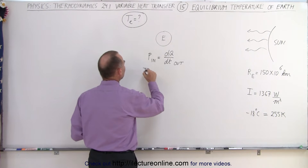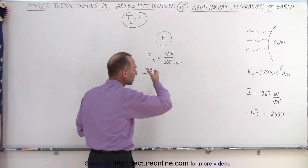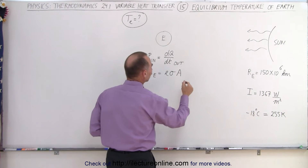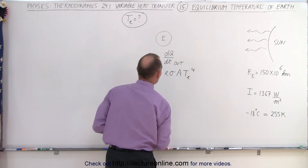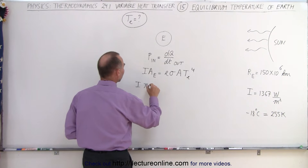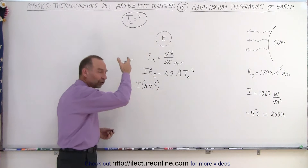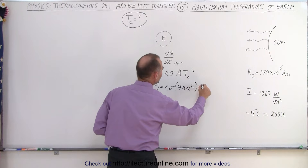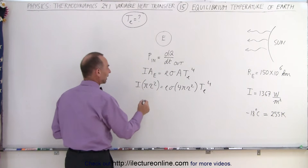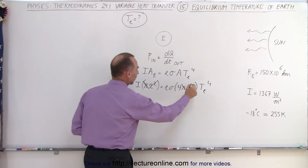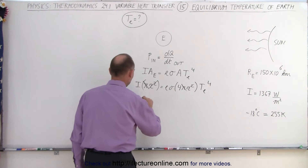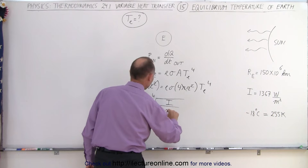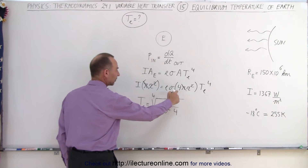The intensity times the effective cross-sectional area of the Earth equals E sigma times the surface area of the Earth times the equilibrium temperature to the fourth power. That gives us intensity times pi r squared equals E sigma times four pi r squared times T equilibrium to the fourth. The pi's and r squared cancel out, so solving for the equilibrium temperature we get the fourth root of the intensity divided by E sigma times four.